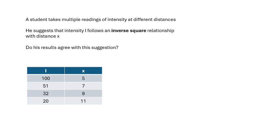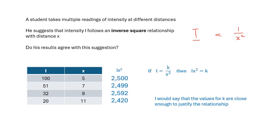Right then, moving on. A student takes multiple readings of intensity at different distances - it might be light intensity, it might be gamma radiation - with distance. He suggests that I follows an inverse square relationship with distance. In other words, he suggests that the intensity is proportional to 1 over x squared. And we've got some data here from his experiment. So do you agree that it follows that relationship? How would you test that relationship? So have a little think. You should know how to do this. And basically, if I equals a constant over x squared, then I times x squared equals a constant.